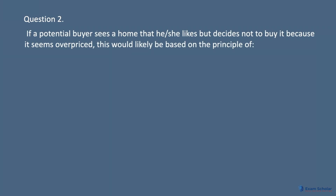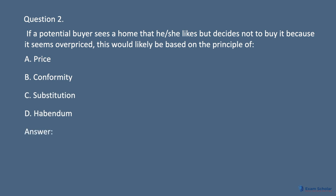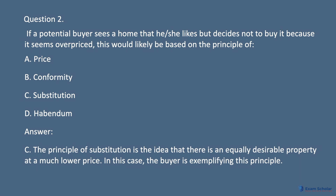Question 2. If a potential buyer sees a home that he or she likes but decides not to buy it because it seems overpriced, this would likely be based on the principle of: A. Price. B. Conformity. C. Substitution. D. Habendum. Answer: C. The principle of substitution is the idea that there is an equally desirable property at a much lower price. In this case, the buyer is exemplifying this principle.